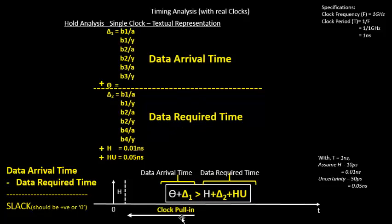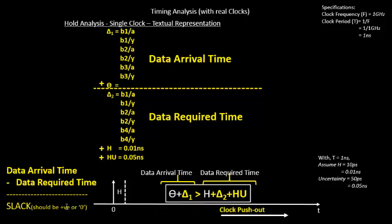To summarize: for the data arrival time we do clock pull-in, and for the data required time we do clock push-out. Clock pull-in reduces δ1, which reduces the data arrival time — potentially causing a negative slack.